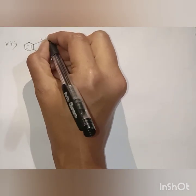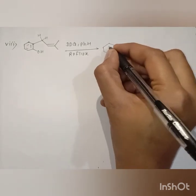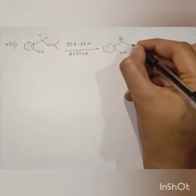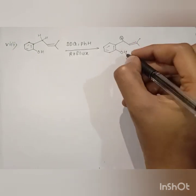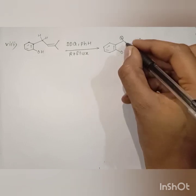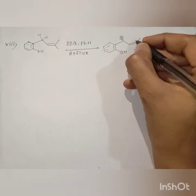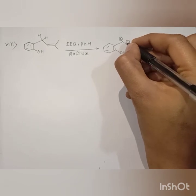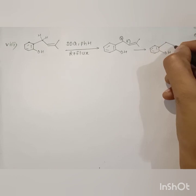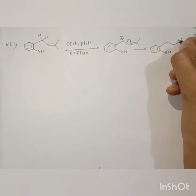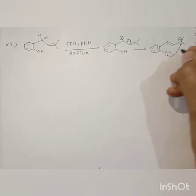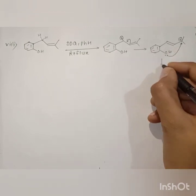Here, DDQ removes this benzylic hydrogen to give the benzylic carbocation. This benzylic carbocation is captured intramolecularly by this hydroxyl nucleophile, leading to formation of a 4-membered ring, but it is not stable. Therefore, this bond migrates and we get a tertiary carbocation.